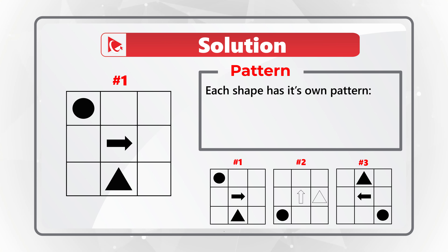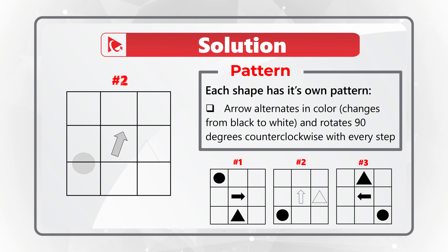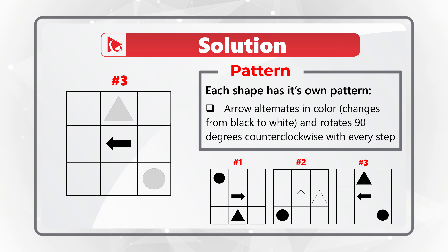Let's start with the arrow. The arrow alternates in color, changing from black to white, and also rotates 90 degrees, staying inside the same middle square of the matrix. The tricky part is that the arrow rotates 90 degrees counterclockwise with every step.